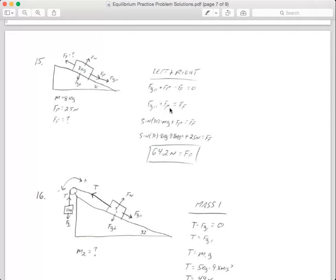I'm out of left and right arrows, so I say equals zero. Gravity parallel and push, my right stuff, is going to equal my left stuff, which is the force of friction. Plug in what these two things are, gravity parallel and the force of push. Gravity parallel is the sine of the angle times mg, and force of push is 25. The sine of 30 times the mass, which is 8, times 9.8 meters per second squared, plus 25 gives me friction, which is 64.2 newtons.